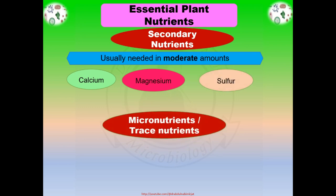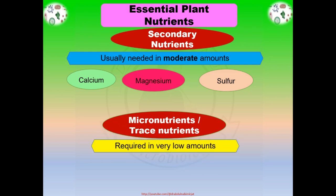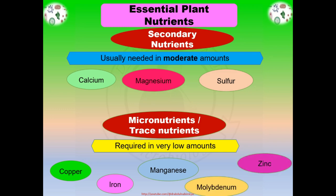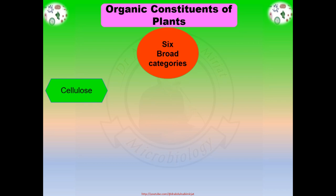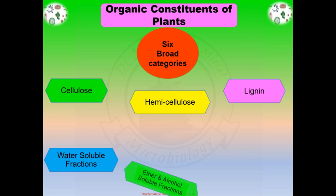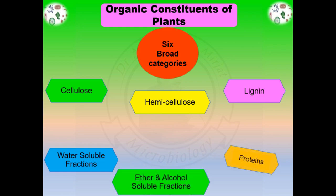Some nutrients are called micronutrients or trace nutrients. These are required in very low amounts in plants compared to primary or secondary nutrients. Micronutrients include copper, iron, manganese, molybdenum, and zinc. According to Alexander in 1961, the organic constituents of plants are classified into six broad categories: cellulose (the most abundant chemical constituent), hemicellulose, lignin, water-soluble fractions, ether and alcohol-soluble fractions, and proteins.